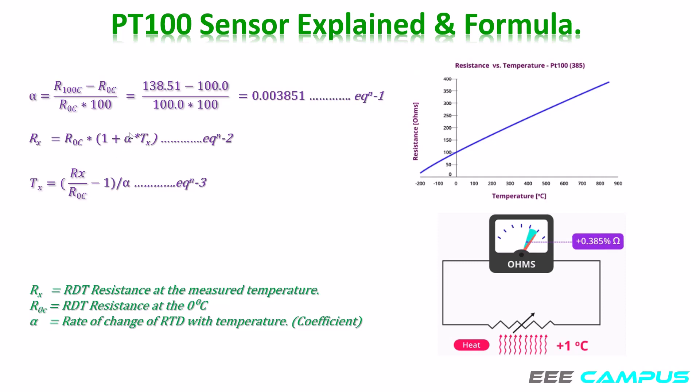Both equations have a coefficient that is alpha constant. We use equation 1 to find the value of the alpha constant. I will put the value of the resistance of the PT100 sensor at 100 degrees temperature, and the value of the resistance of PT100 sensor at 0 degrees temperature. If we complete the calculation by multiplying it by 100, the value we will get is our alpha constant, which is called the rate of change of RTD with temperature.